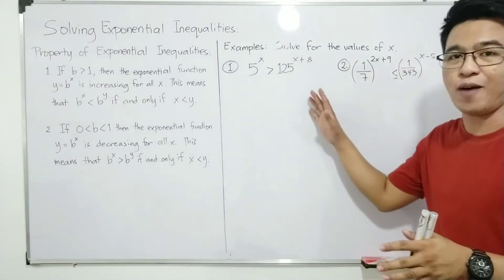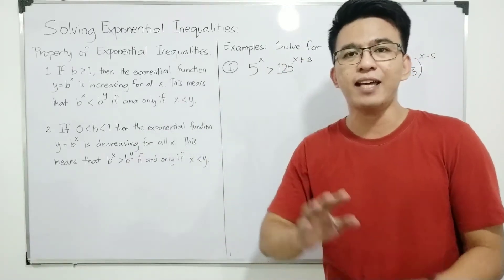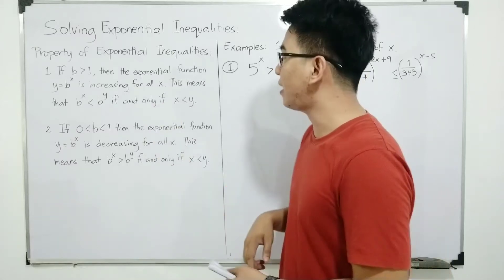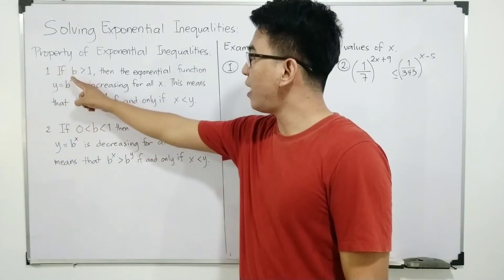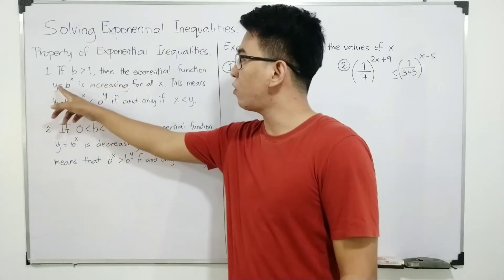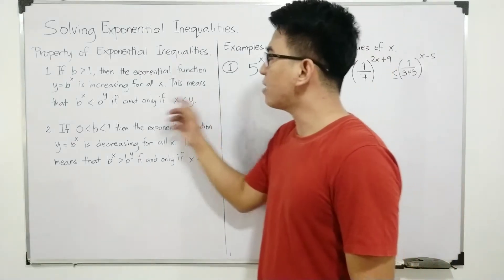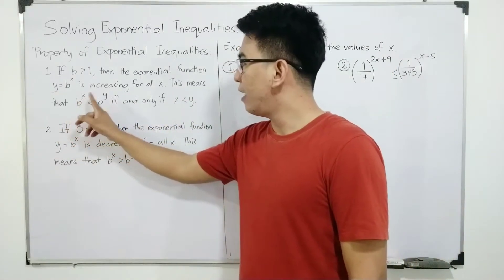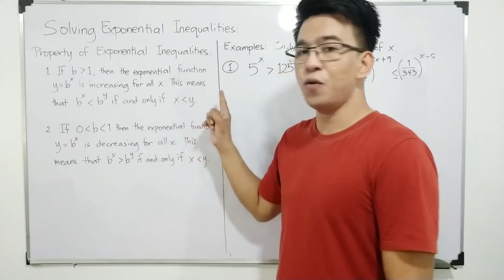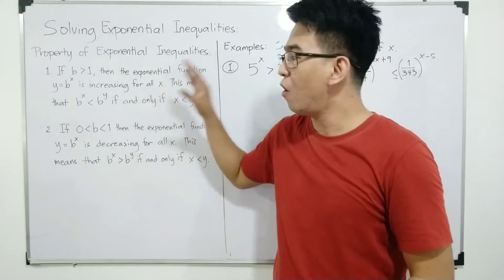Before we start solving exponential inequalities, let's talk about the two important properties that we will use throughout this video. What are the properties of exponential inequalities? First, if b is greater than 1 — b refers to the base — then the exponential function y = b raised to x is increasing for all x. This means that b raised to x is less than b raised to y if and only if x is less than y.